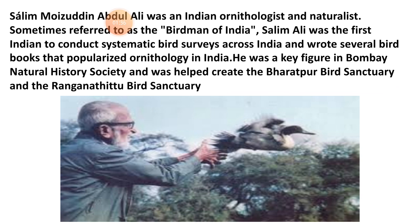As a 10-year-old, Salim once noticed a flying bird and shot it. Tender at heart, he instantly ran and picked it up. It appeared like a house sparrow but had a strange yellowish shade on the throat. Curious, he showed the sparrow to his uncle, who was unable to answer his questions about the bird's kind. His uncle took him to W.S. Millard, the honorary secretary of the Bombay Natural History Society. Amazed at the unusual interest of the young boy, Millard took him to see many stuffed birds. When Salim finally saw a bird similar to the one he had found, he got very excited, and after that the young Salim started visiting the place frequently.